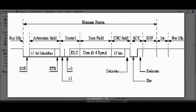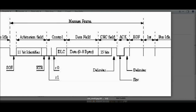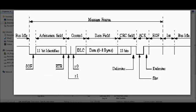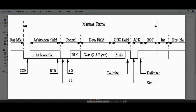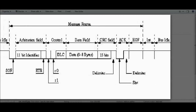Next is the control field, which comprises R1 and R0 — dominant bits — followed by the DLC, which is the Data Length Code, of 8 bits. Then we have the data field, which is 0 to 8 bytes — this is the field that contains your actual message to be transmitted. The DLC decides how many bytes of the data field are valid; for example, if you want to send 6 bytes, you set DLC to 6.